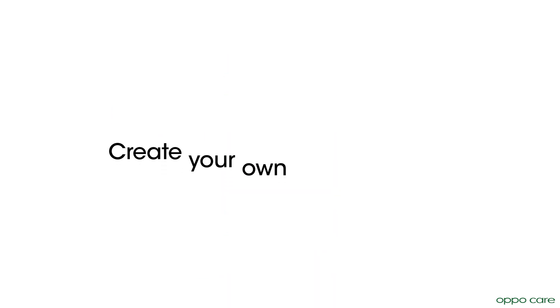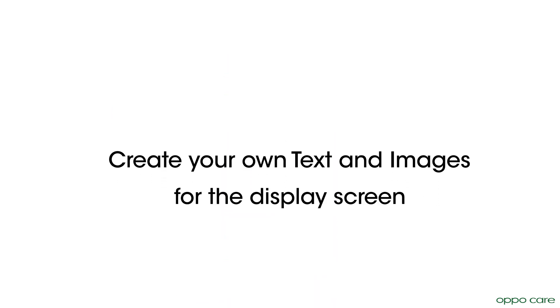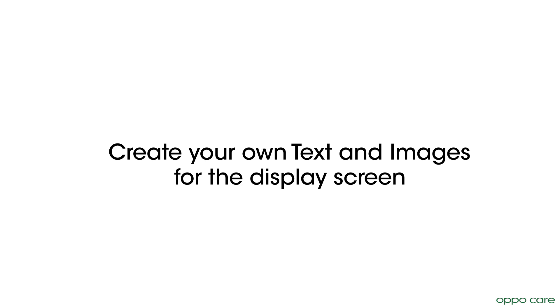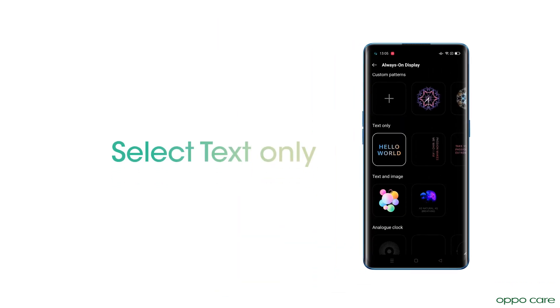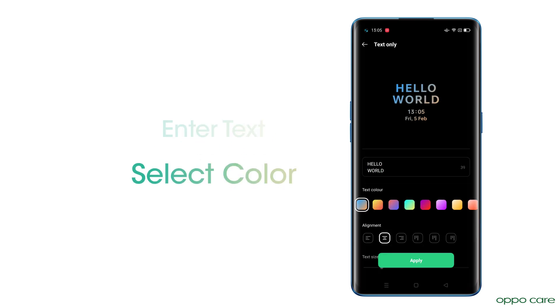You can also create your own text and images for the display screen. For this, select Text Only. Enter text. Select Color.